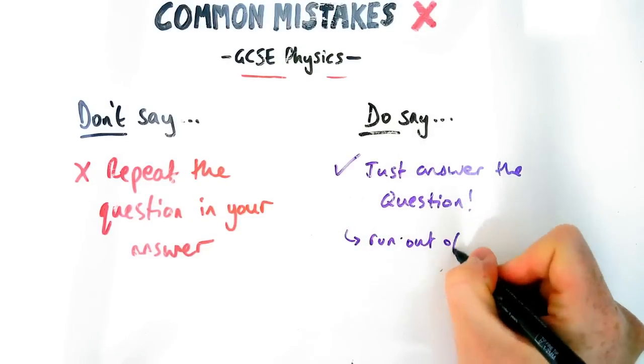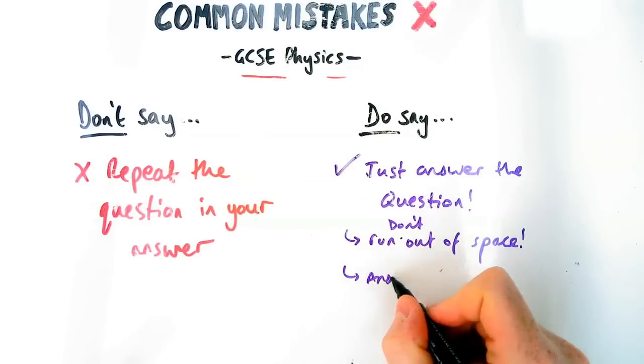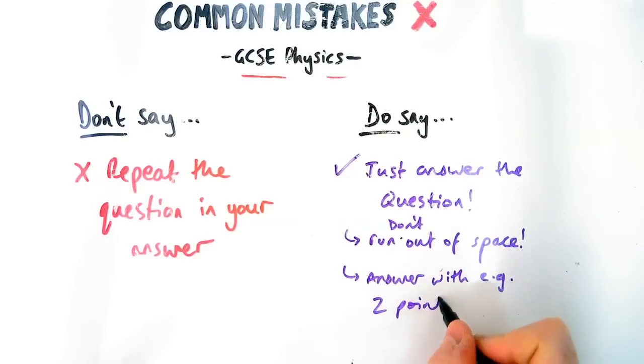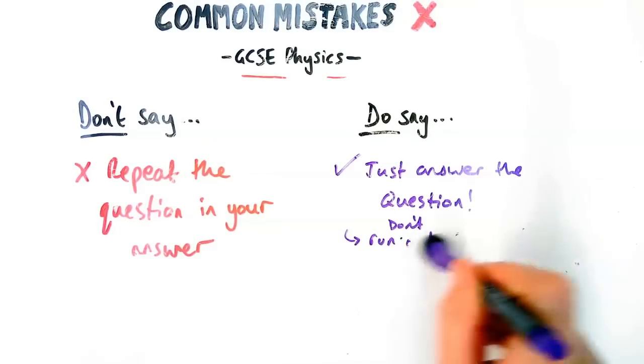So please don't do it because you're going to run out of space, especially if you've got big handwriting. And it also means that you can essentially answer with two points if there's two points on the mark scheme. So don't do it. Even for a six marker, if you mention the question in your answer, it's not wrong. It just means you have less space to answer and get to your marks and miss out on easy marks.